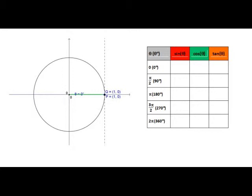Cos is the x coordinate of the point on the unit circle, which is again the point P. And tan is the y coordinate of the point on the tangent, which is the y coordinate of the point Q. So in this case we can see that sine of 0 is 0, the y coordinate of P is 0, cos of 0 is 1, and tan of 0 is also 0.